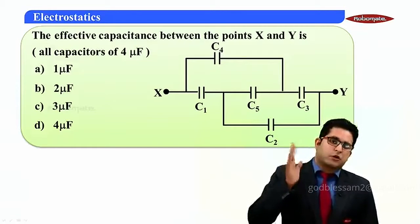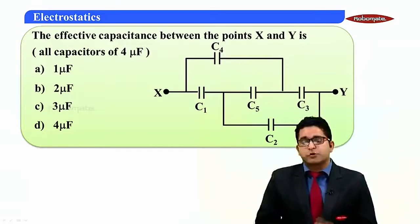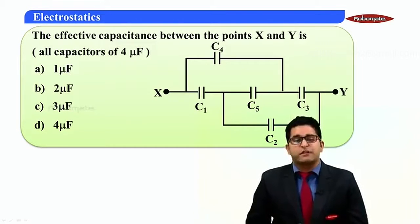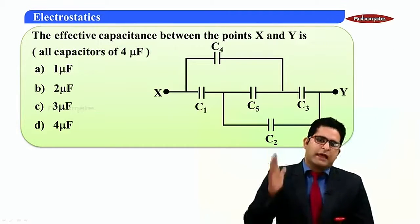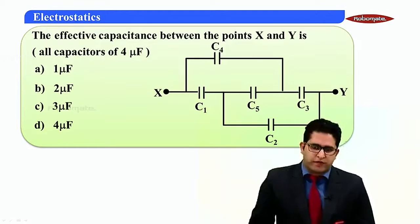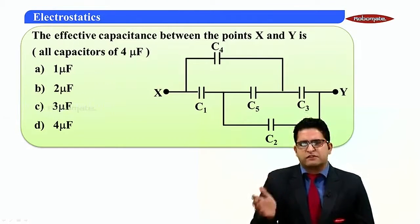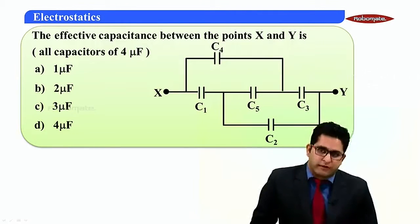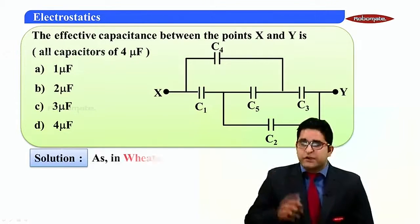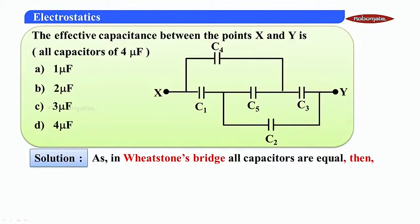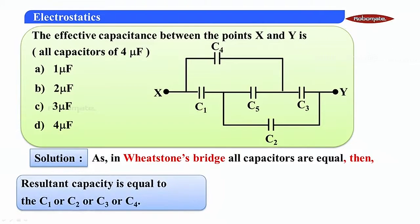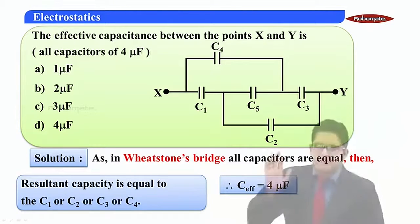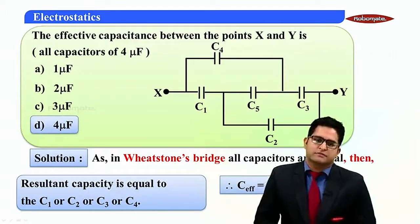This structure also represents a Wheatstone Bridge, and we are supposed to find the effective capacity between points X and Y. All capacitors have a value of 4 microfarad, so C1 = C2 = C3 = C4 = 4 microfarad. The resultant capacity equals any one of them — 4 microfarad. Option D is the correct answer.